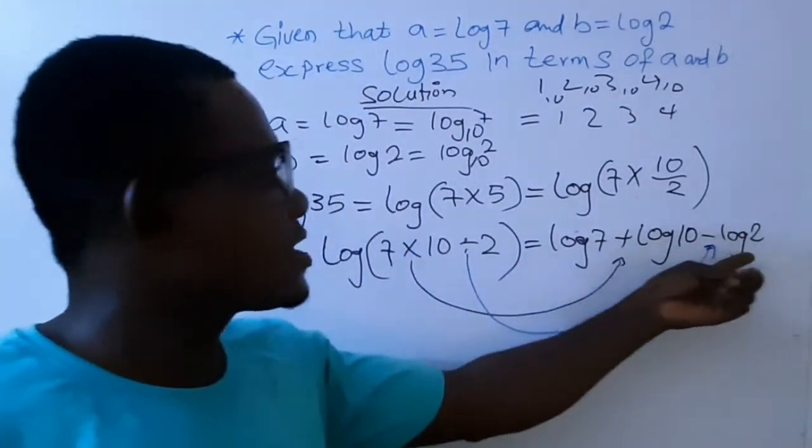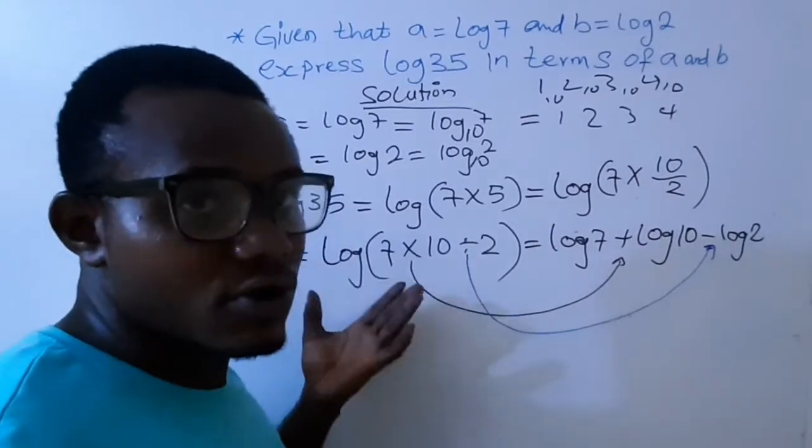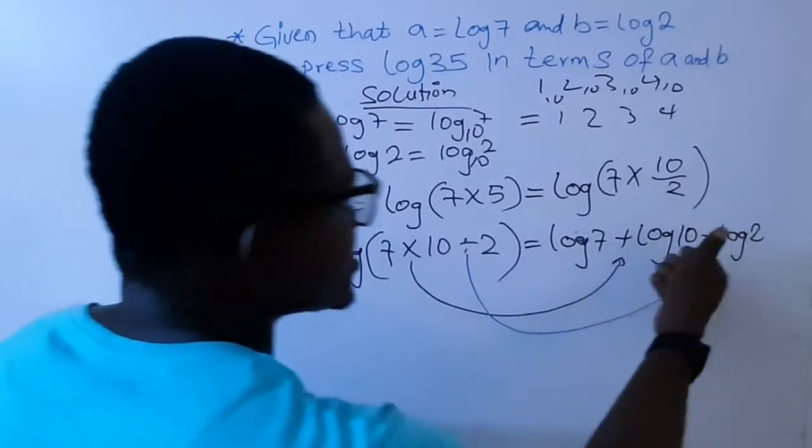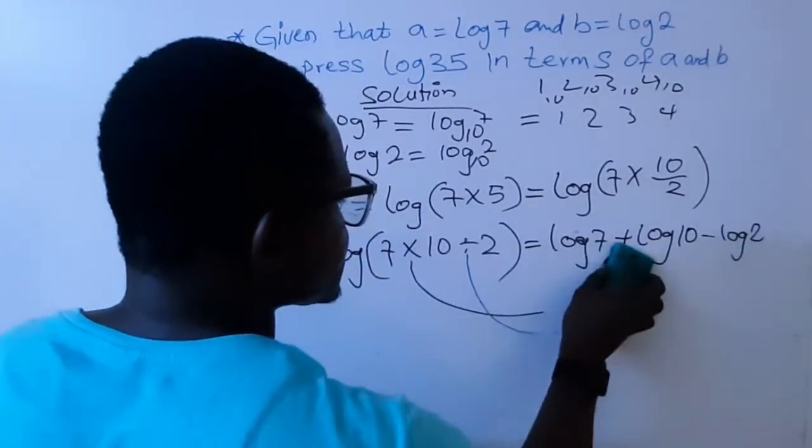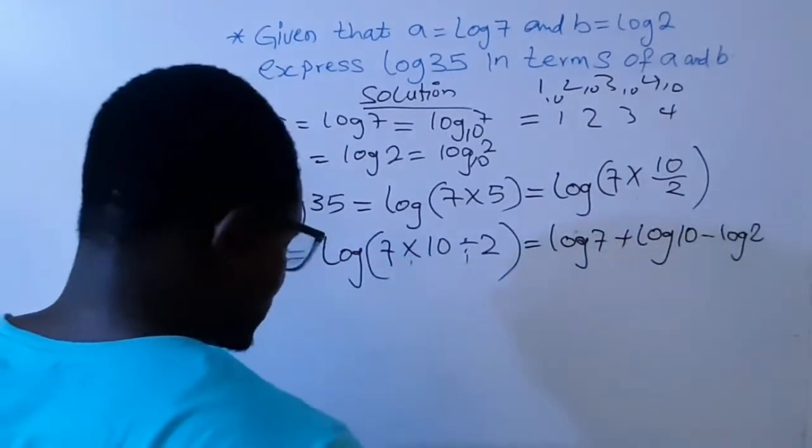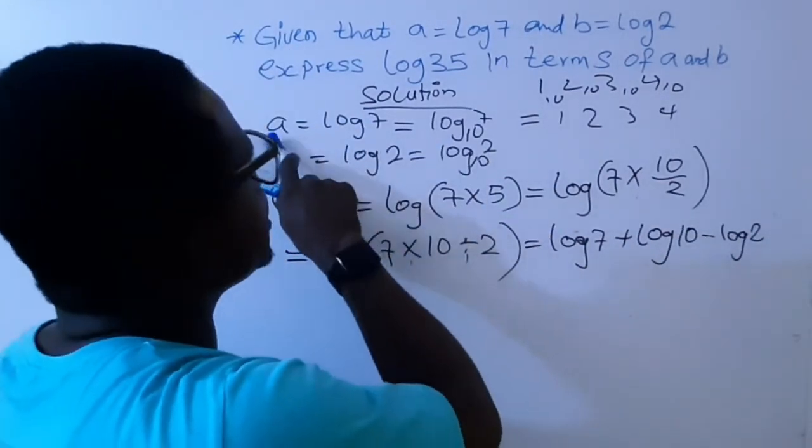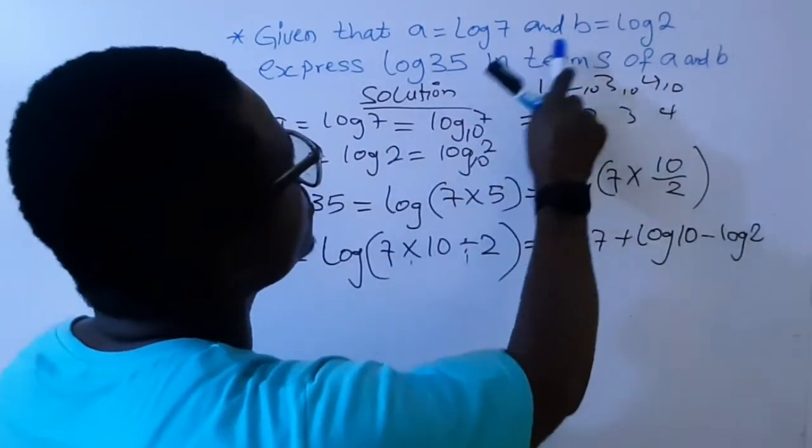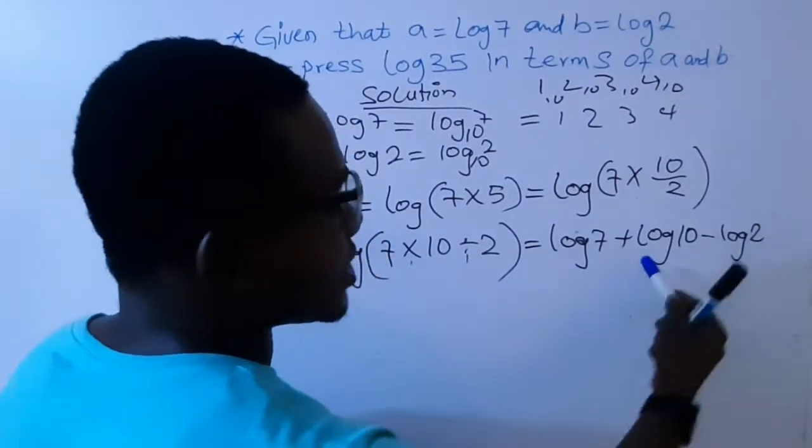So now, if I have it in this format, I can transfer it to this form. Now from here, since I have it this way, I can now transfer it. Don't forget, the question says A is log 7. I can change this one to A. And B is log 2. I can also change this one to B.